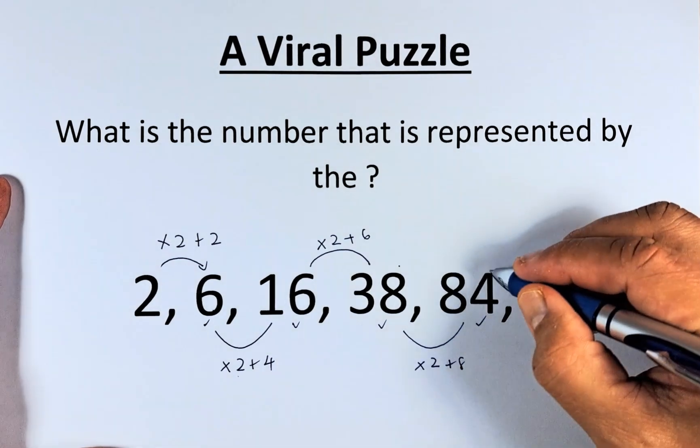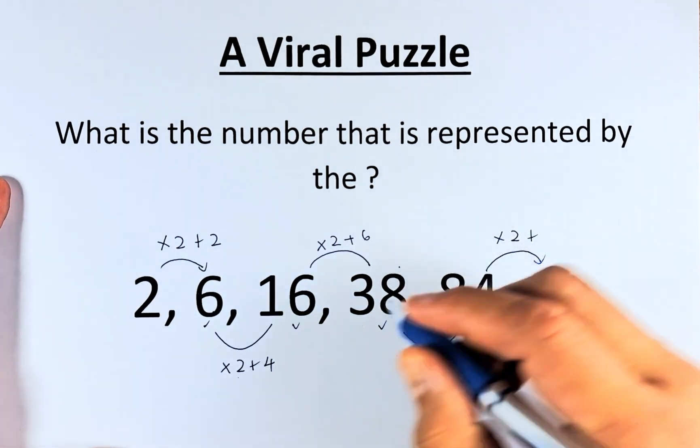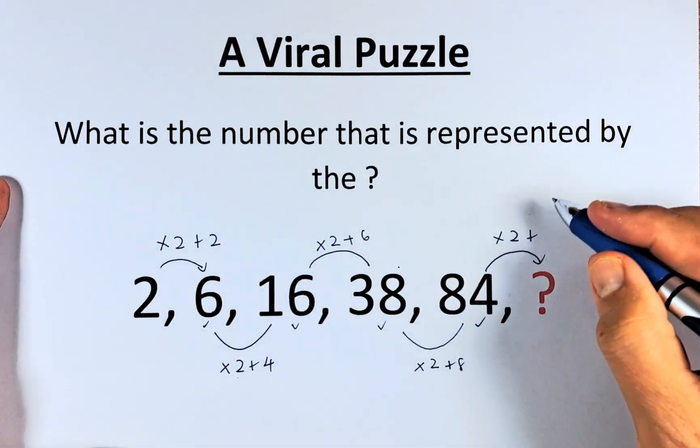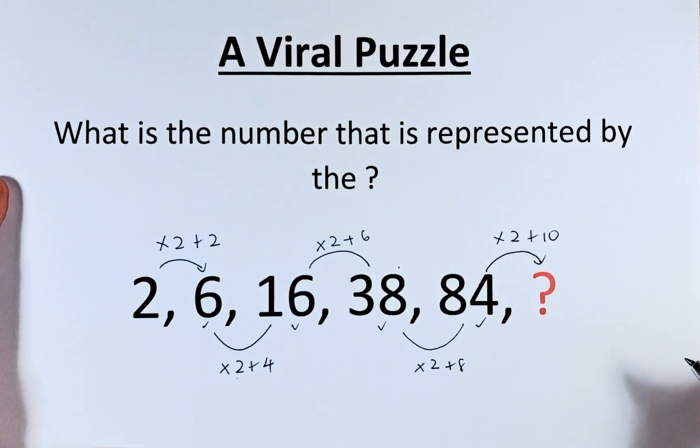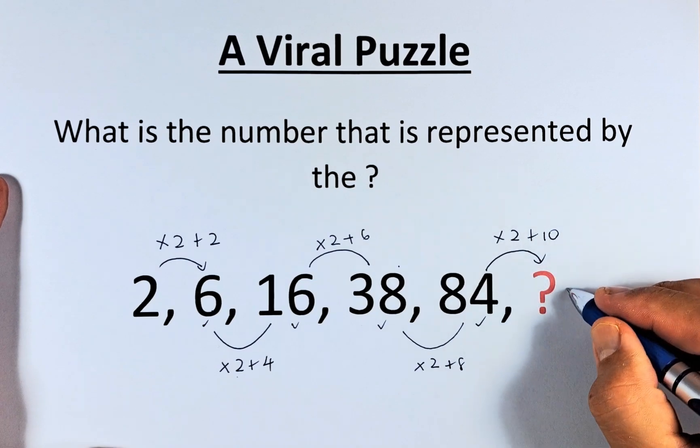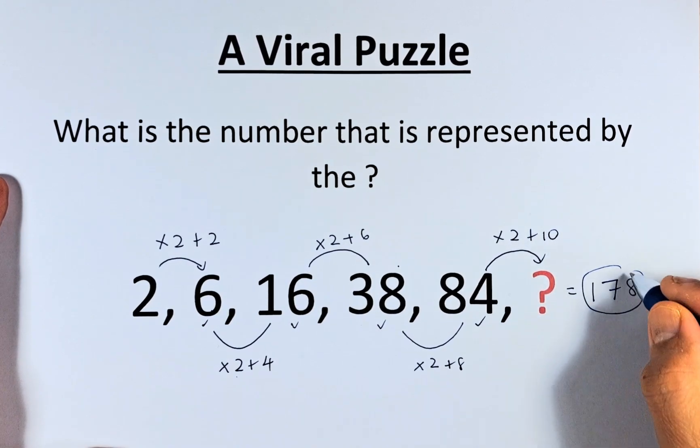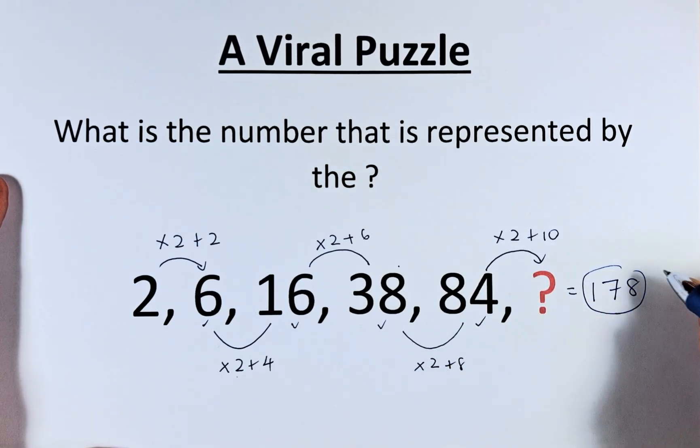And last but not least, from 84 to the question mark. We're going to multiply by 2, and because we have added 2, 4, 6, 8, the next number has to be 10. So 84 times 2 is 168. When you plus 10, the question mark equals 178 because 84 times 2 is 168 plus 10.